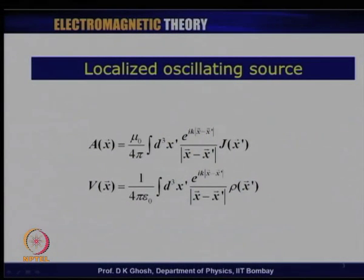We have come to the end of this course. Last time we were talking about radiation theory. We will bring that to some conclusion today and then summarize whatever we have learnt. This course has been primarily for understanding the physical implications and the mathematical importance of electromagnetic theory, and we have introduced the concept of a vector and a scalar potential.